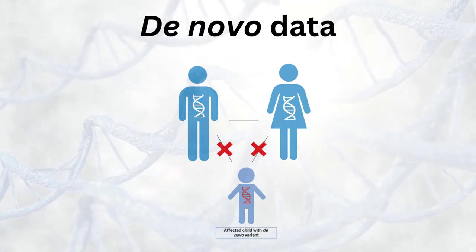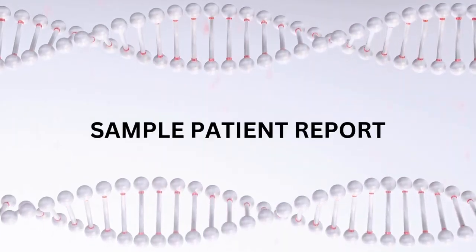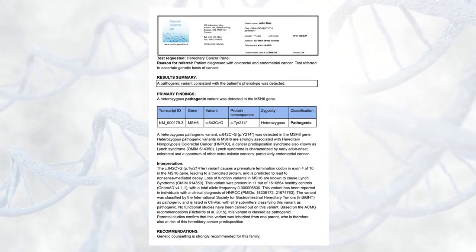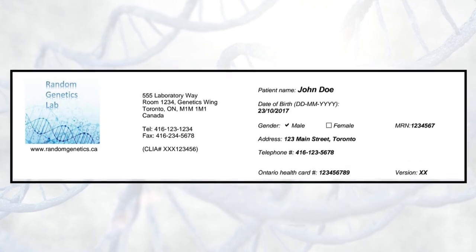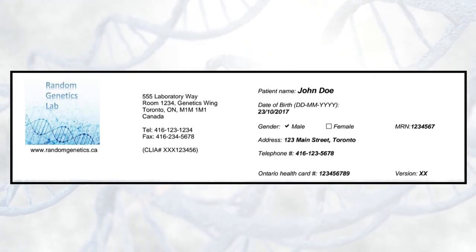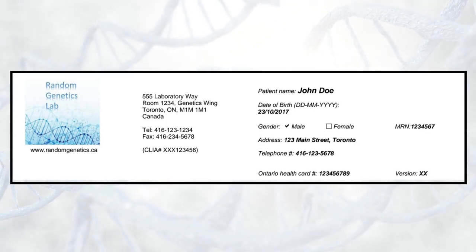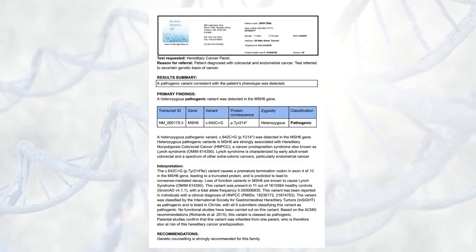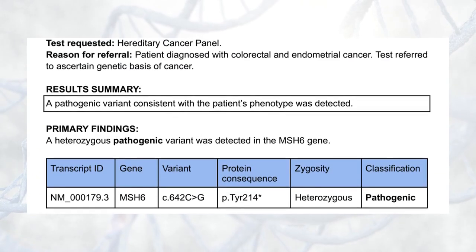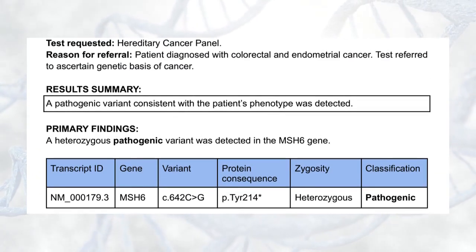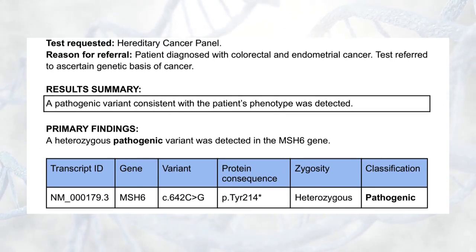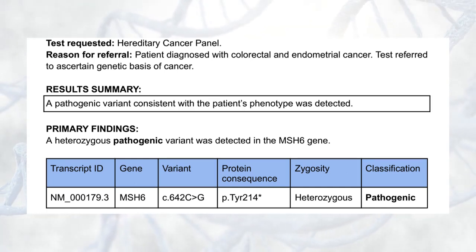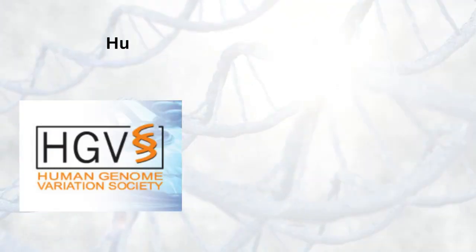Now we'll take a look at a variant in a sample patient report. What does the information mean and how can we interpret it? The information at the top of this report refers to the details surrounding the patient and laboratory, such as the lab address and basic patient identifiers. Following this, we find basic information concerning what sort of testing was ordered and a summary of findings. This summary table includes the variant identified in the patient as a result of testing. Finally, the interpretation of the variant is provided here.